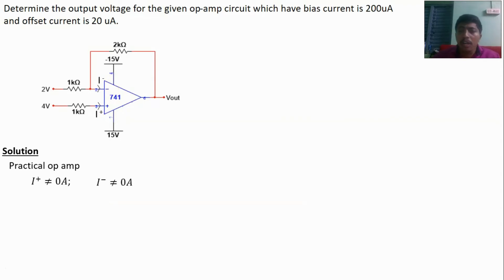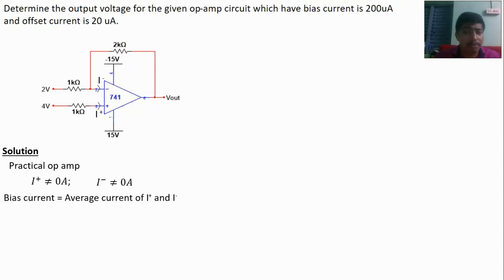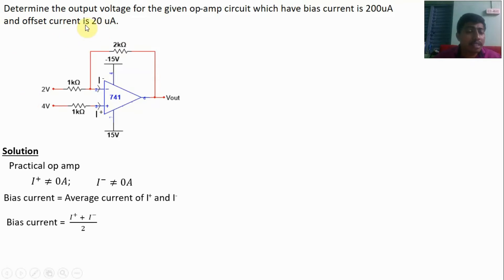So what is meant by bias current? The bias current means the average current of I minus and I plus — that is the definition. Mathematically, bias current equals (I plus + I minus) / 2. The offset current is the difference between I plus and I minus — that is its definition.